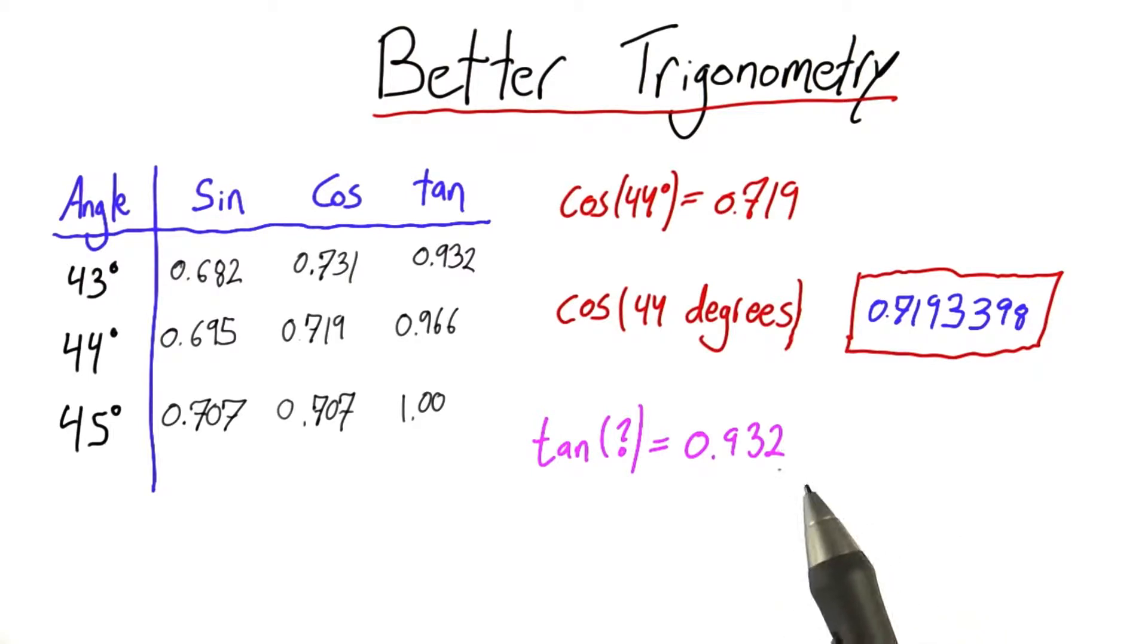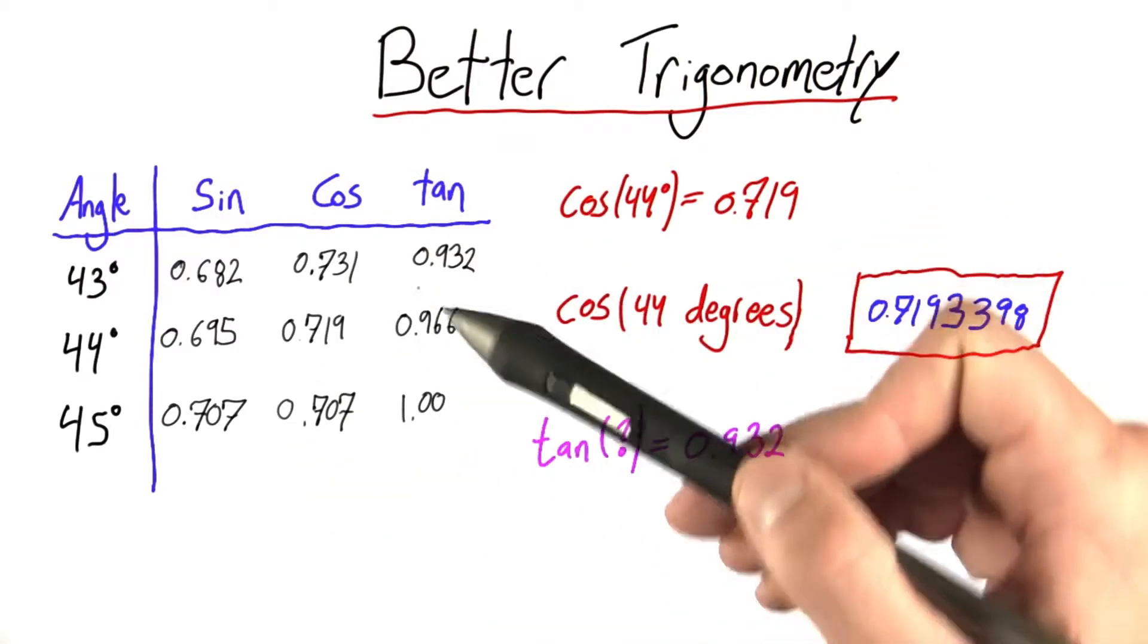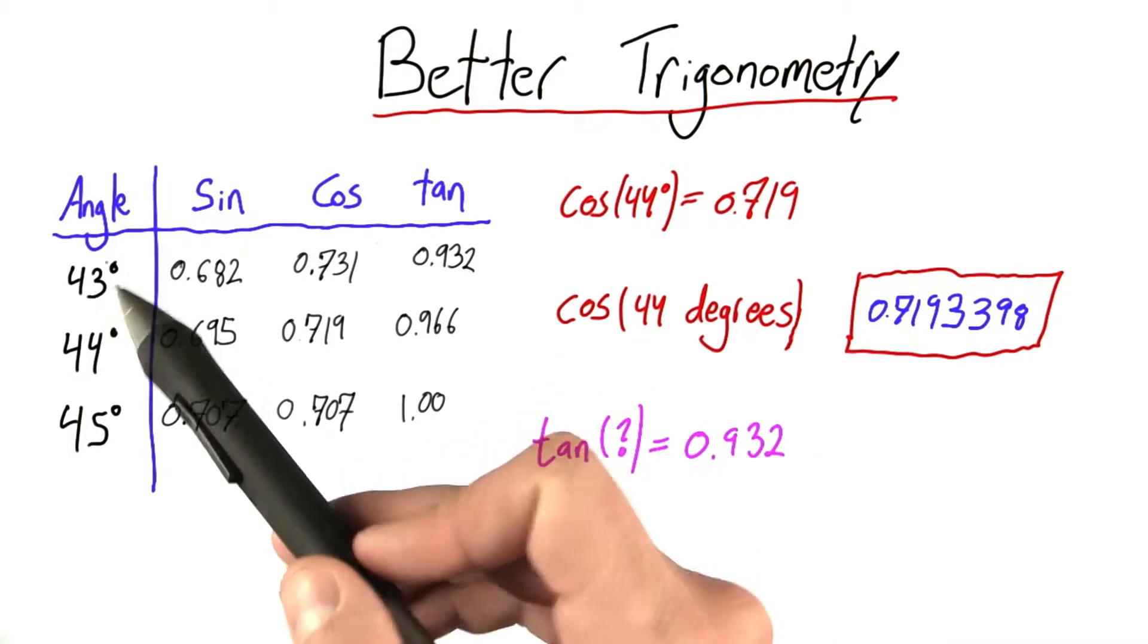Well, you've had some practice in this. You could go to your table, look up tangent 0.932, and see that the angle we're talking about is 43 degrees.